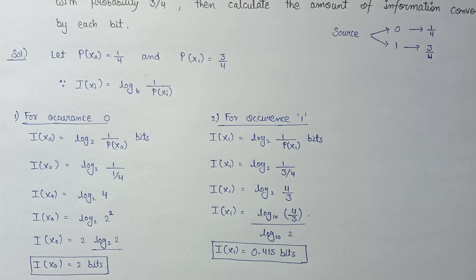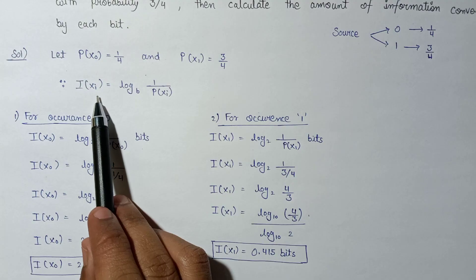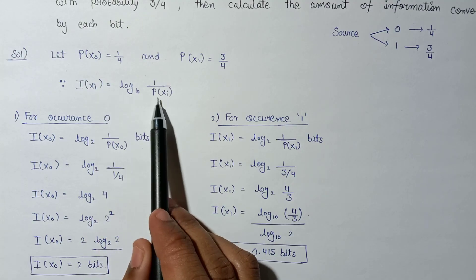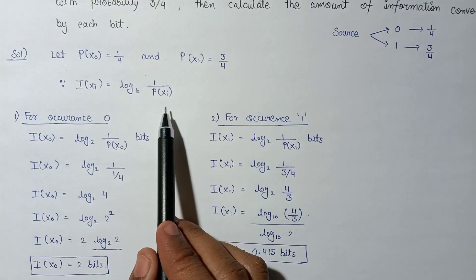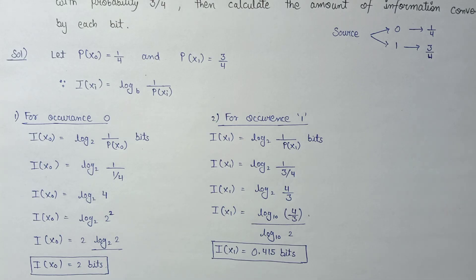In this way we can calculate the information content easily using the formula I(xi) = log_b(1/P(xi)) for any of these questions. If you like my content then do subscribe to my channel and please hit the like button. Thank you.